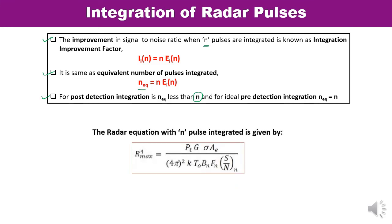When N pulses are integrated, the radar equation can be modified accordingly. It is written as: PT times G times radar cross section times AE, divided by (4π)² times k times T-naught times BN times FN, giving S/N for N pulses. The term S/N of N is the signal-to-noise ratio of each individual pulse. From this you can calculate the radar range by substituting the known factors, and in this manner you can explain how integration impacts the efficiency.